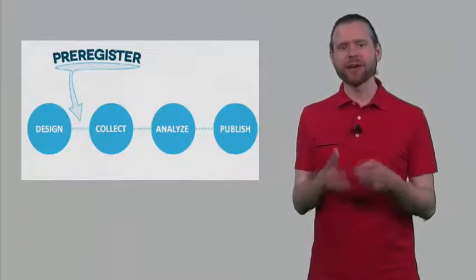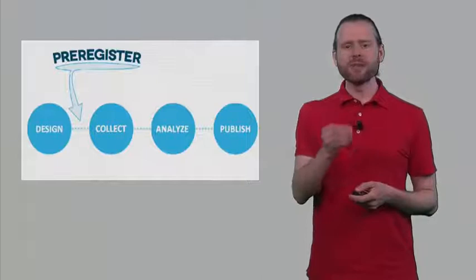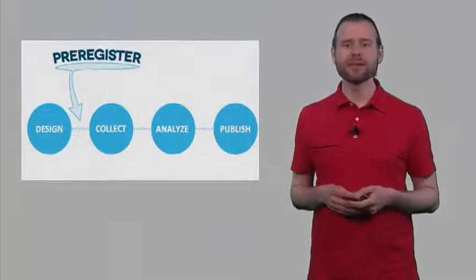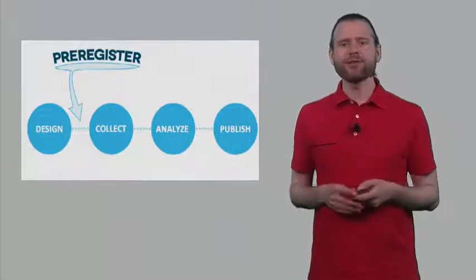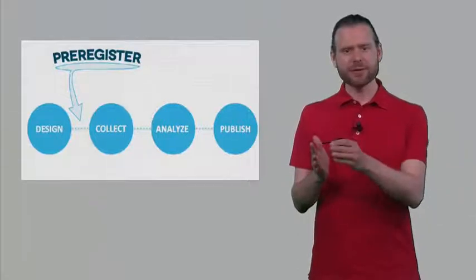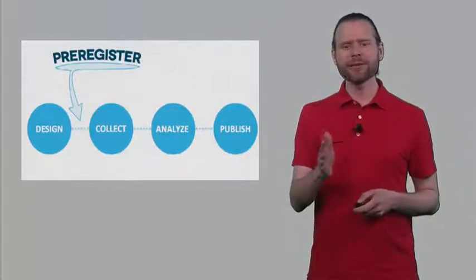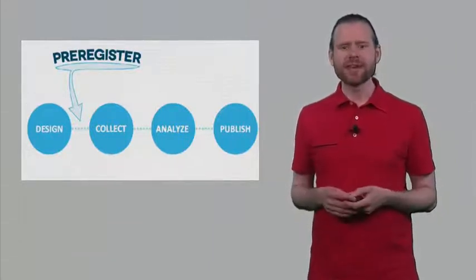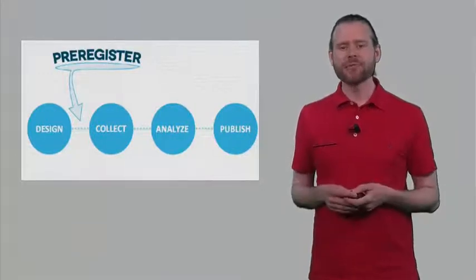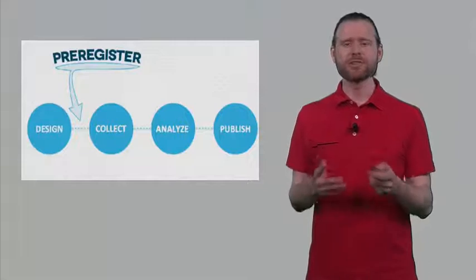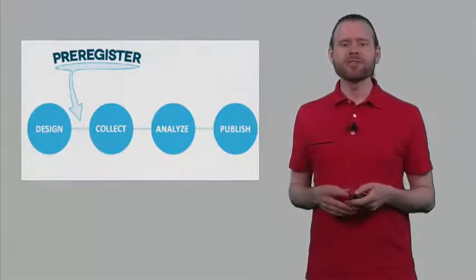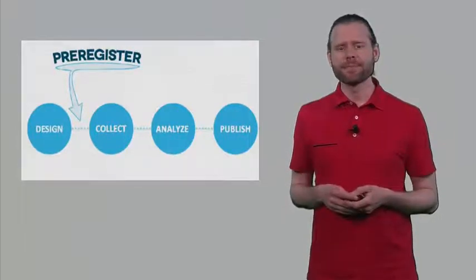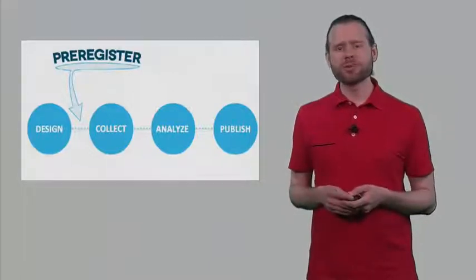And this is another very important benefit of these registered reports. When you have submitted your study design for publication, the peer reviewers give you some suggestions to improve the way that you want to study this topic. The editor of the journal will say as long as you follow this pre-registered design, regardless of the outcome of the study, we will publish it. Now we know that publication bias is a huge problem in the scientific literature. There are way more study results that turn out to be statistically significant, as you would expect. The reason for this is that people don't publish their non-significant findings, or when they are submitted for publication, journals don't accept them.